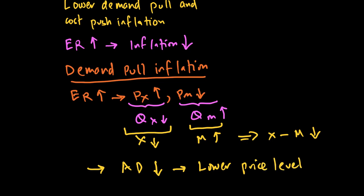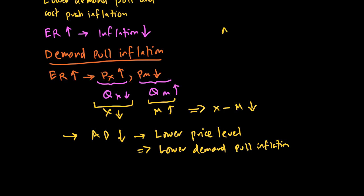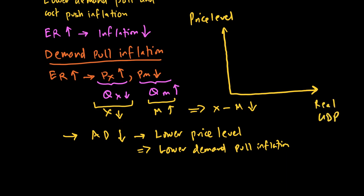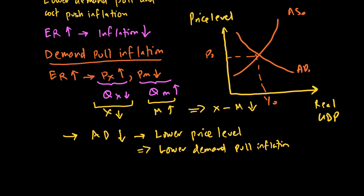A fall in AD means a lower price level, causing lower demand-pull inflation. We show this in the AD/AS framework diagram. On the Y-axis is price level, on the X-axis is real GDP. If AD0 and AS0 give us price level P0, then with the rise in exchange rate, X minus M falls, causing AD to fall to AD1, and therefore there will be a lower price level — lower demand-pull inflation because of the stronger exchange rate.